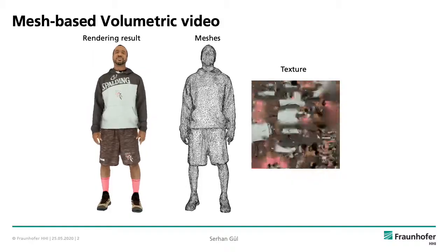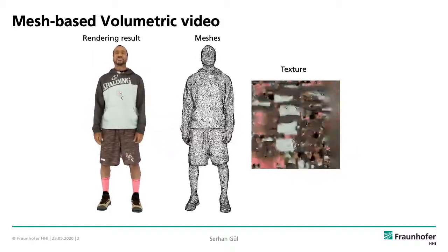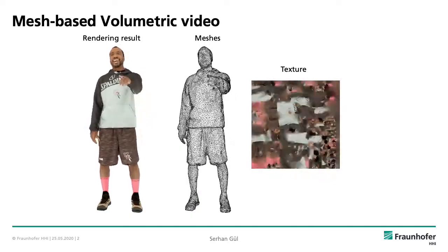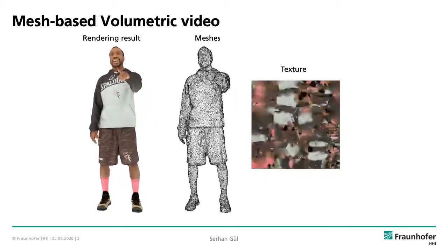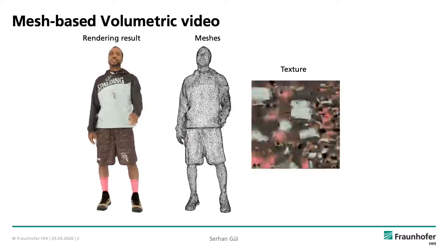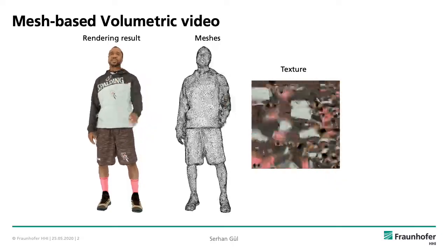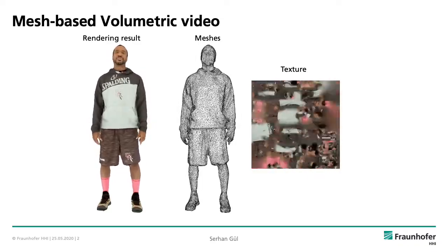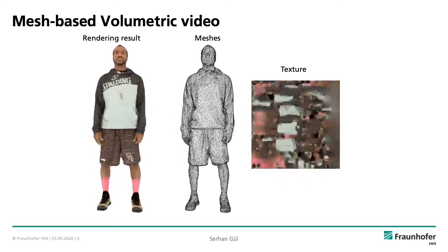First, let's talk about what volumetric video is and which content formats can be used to represent it. Volumetric video is a technique that captures the 3D space and objects from all viewing directions. It allows us to watch a video in 6 degrees of freedom such that we can walk around an object or approach and move away from it. This allows novel mixed reality applications where highly realistic virtual objects can be overlaid on top of real environments and viewed with a high degree of immersion. Depending on the capturing technique, a volumetric video can be represented as point clouds or meshes. We use a mesh-based workflow and represent the texture map as a video stream, rendering the mesh geometry and video-based texture together in a synchronized way to obtain a volumetric video viewable from any viewpoint.